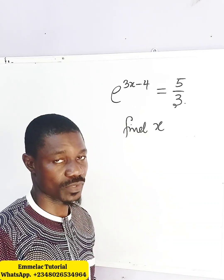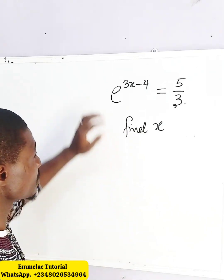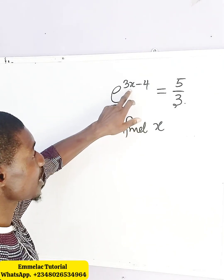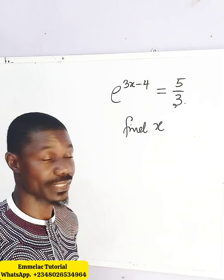Now let's find x in this exponential equation. Welcome to Emmelate tutorial. This is e raised to the power of 3x minus 4, all equals to 5 over 3.